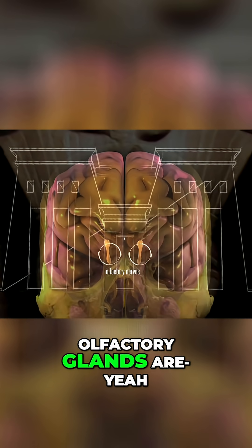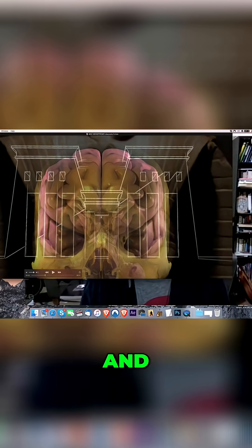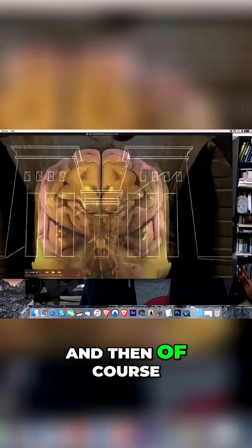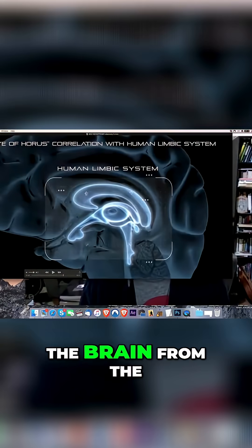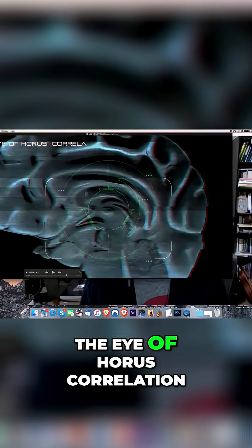The olfactory glands are literally centered in the two pillars. And then, of course, if you look at the brain from the other view, Gary's remarkable finding with the eye of Horus correlation.